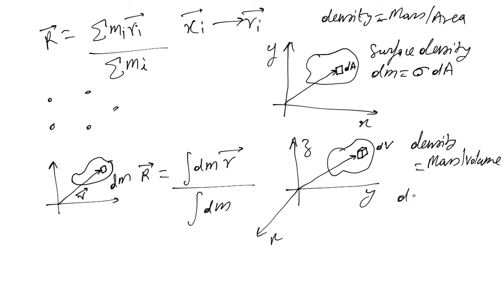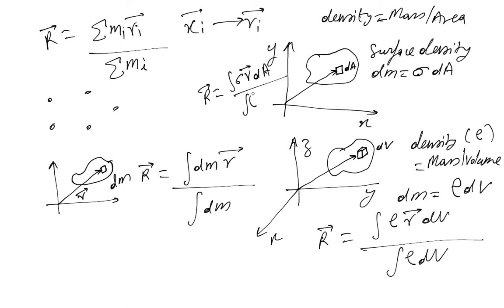So that gives dM equals rho, which is the density, times dV. And then you can calculate R as sum over rho r dV over sum over rho dV. Or here you can calculate it as R equals sigma r dA divided by sigma dA.